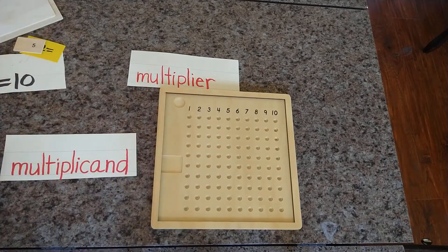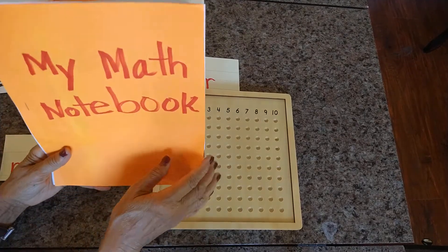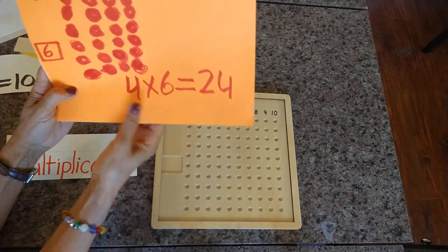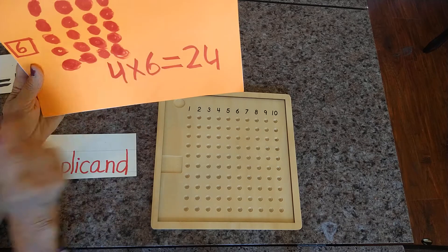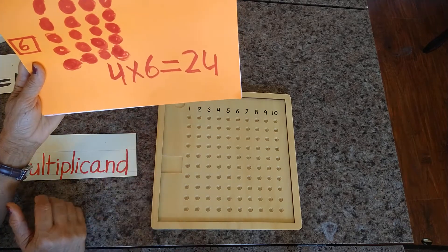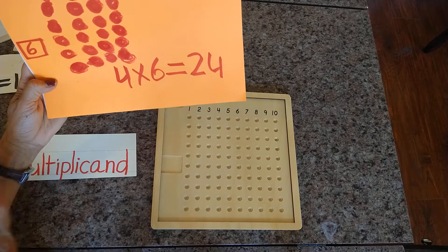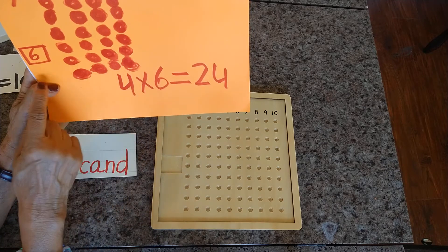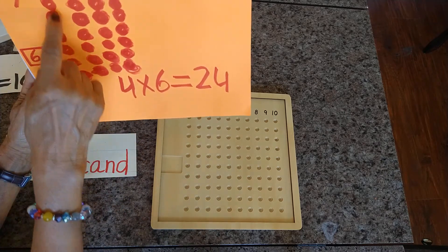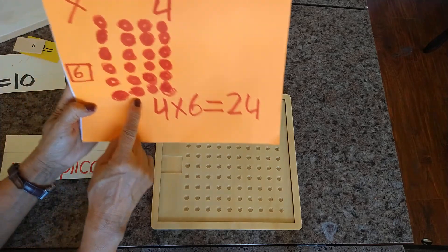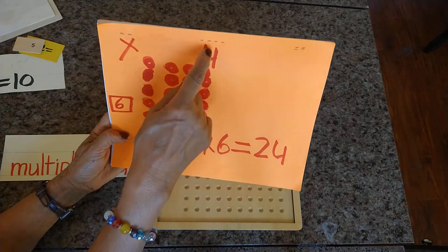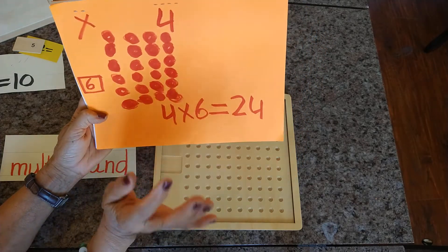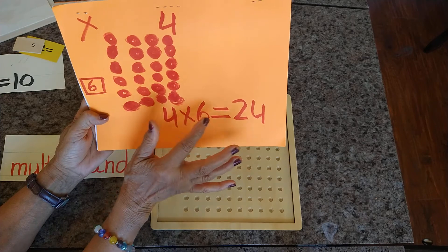So here you could make your math notebook and you write in the equation. And so here it's so simple, right? 4 times 6, the same equation that I showed you on the multiplication bead board. 4 is our multiplier and 6 is our multiplicand. So 1 times 6, 2 times 6, 3 times 6, 4 times 6. So when we count all together, our product is 24. 4 times 6, 24.